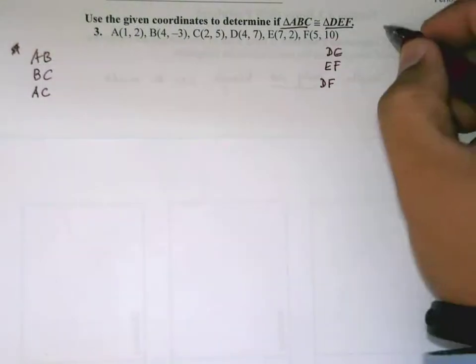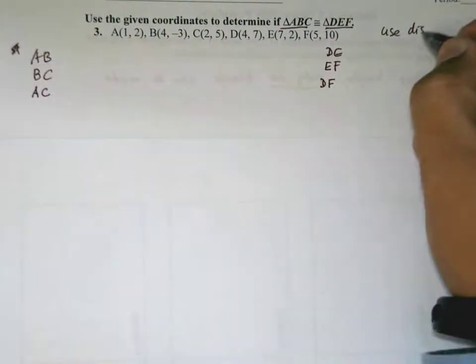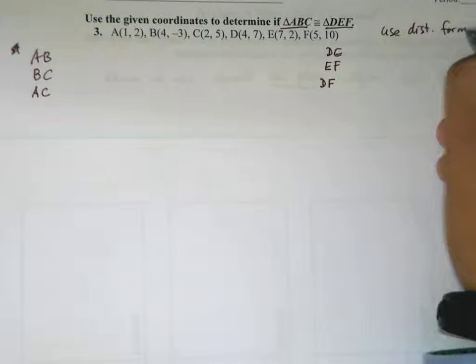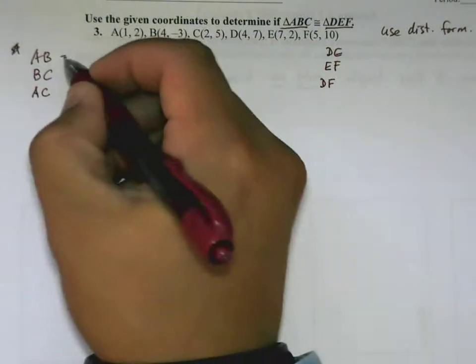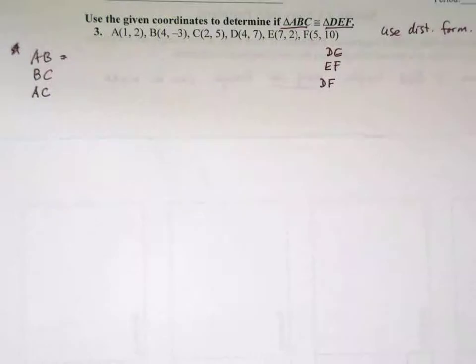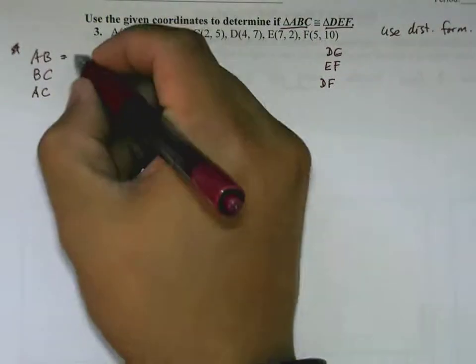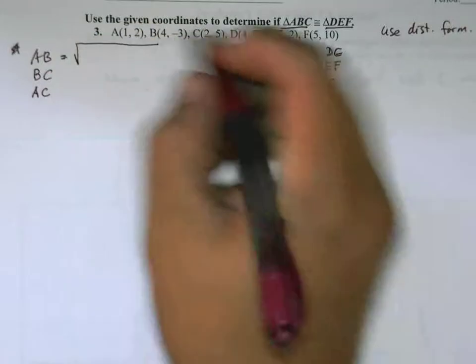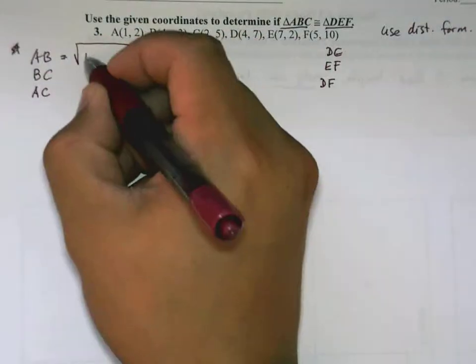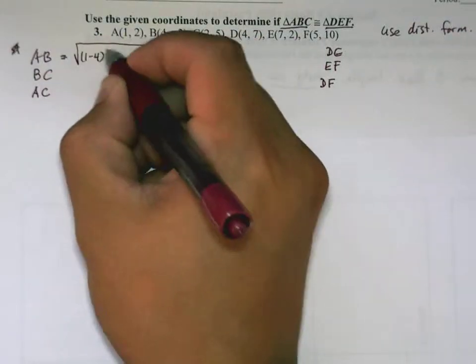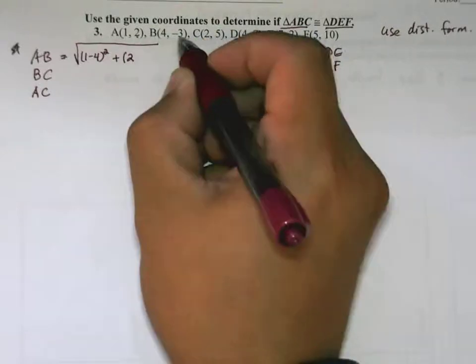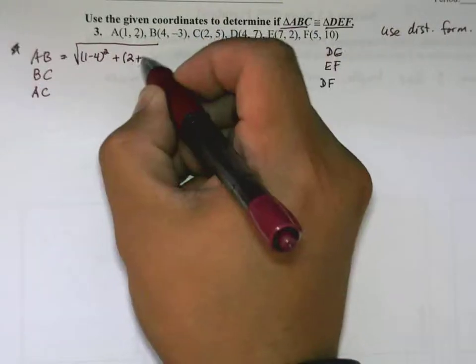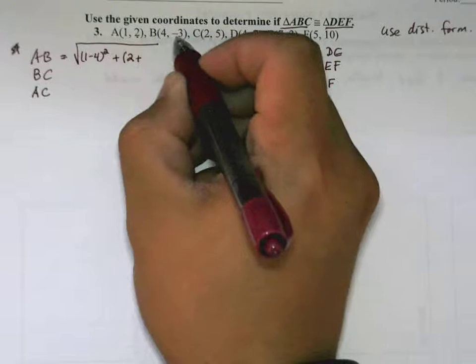Since we're given the coordinates, to find the length of these sides we're going to use the distance formula. The distance formula is the square root of (x₁ - x₂)² plus (y₁ - y₂)². So AB is √[(1-2)² + (2-(-3))²], which is √[(1-2)² + (2+3)²].